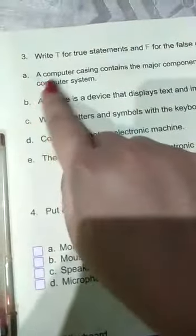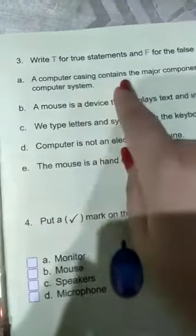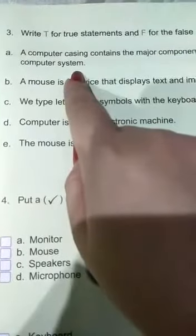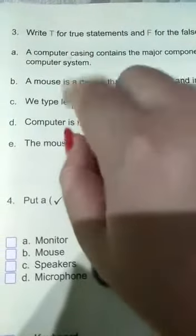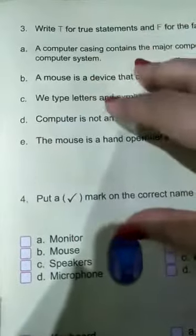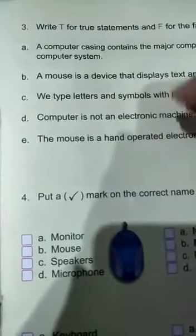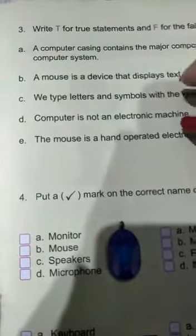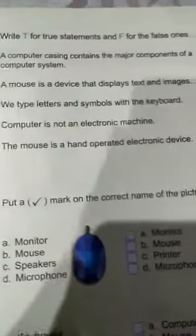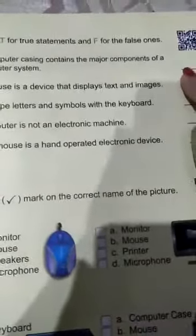Now come to page number 9: write true or false. Number one — a computer casing contains the major components of the computer system. Computer casing contains major components installed inside it — is this true or false? Yes, it is true.